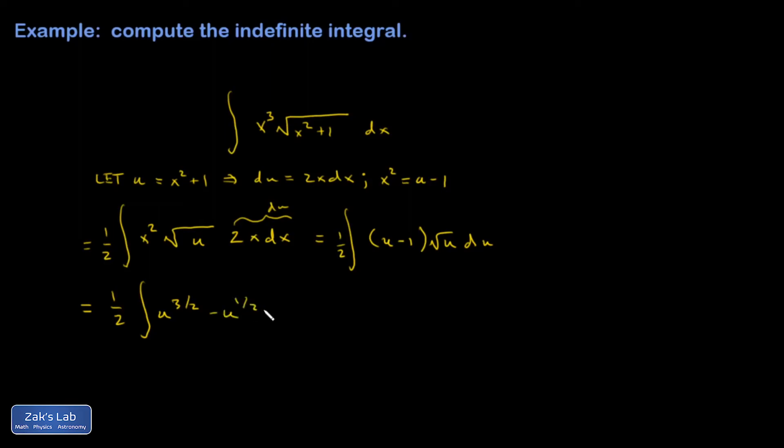So this first one gives me u to the three halves, second one u to the one half. And then I can go ahead and guess the anti-derivatives. This will give me u to the five halves times two fifths.